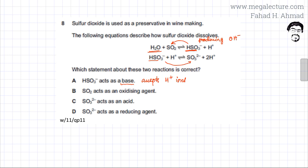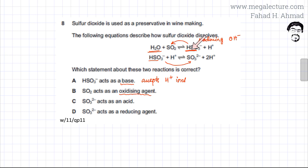The second statement says SO2 acts as an oxidizing agent. For it to act as an oxidizing agent, it must be reduced. Looking at SO2 in the first equation, SO2 gets converted into HSO3⁻. So the conversion is SO2 → HSO3⁻ in the first reaction.